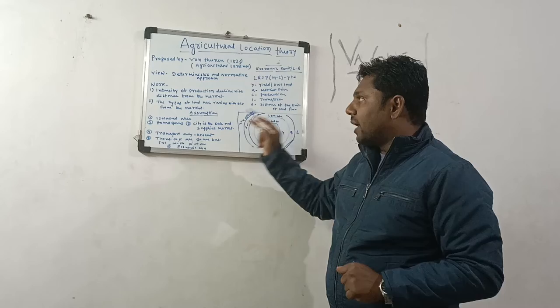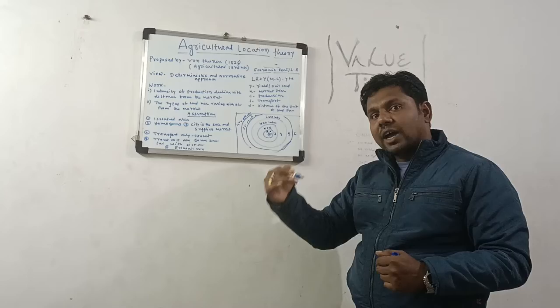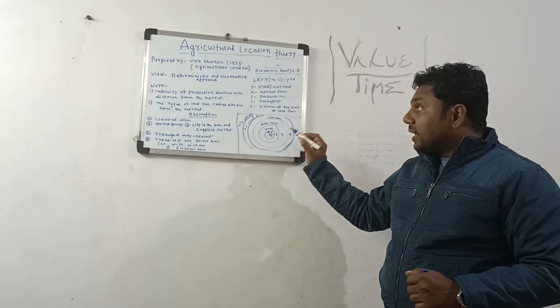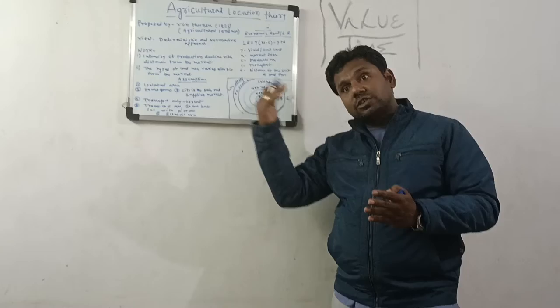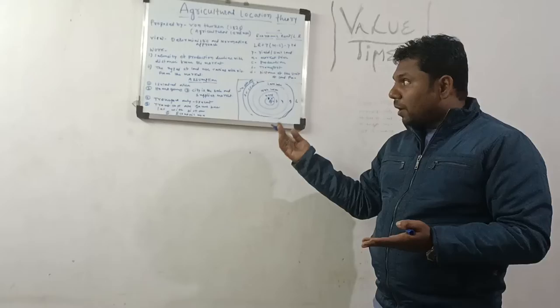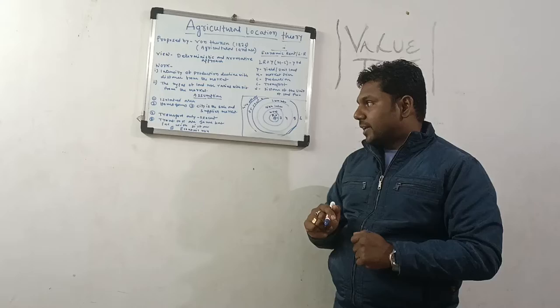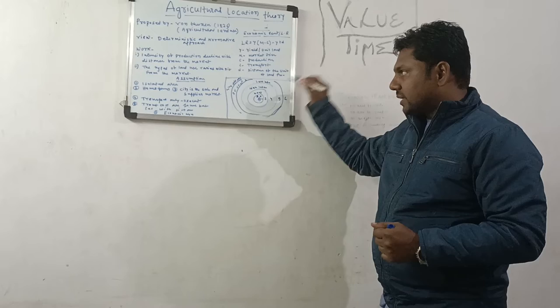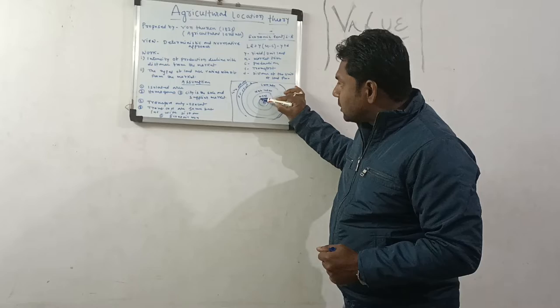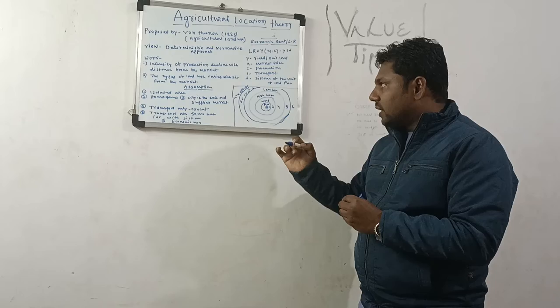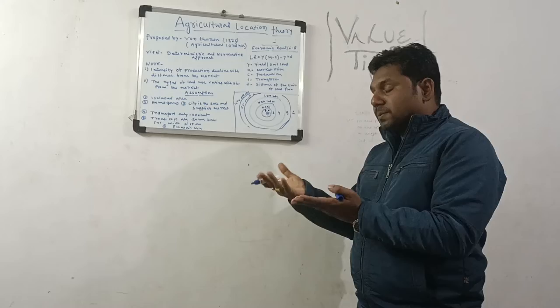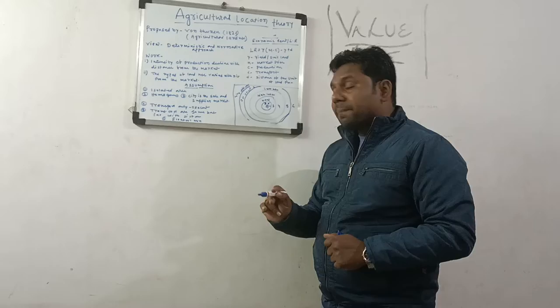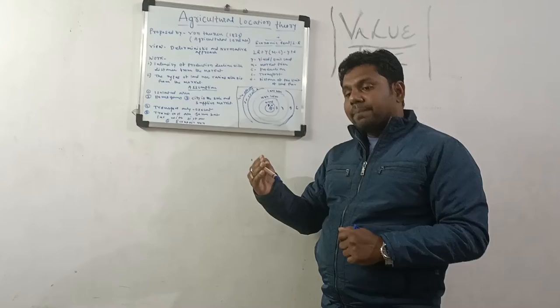Third assumption: the city is the sale and supplier market — the main market for production and sale. Fourth assumption: transport — only one mode of transport is available, pre-industrial revolution style, where transport cost increases with distance from the market. If you go to the periphery, transport cost will be different.